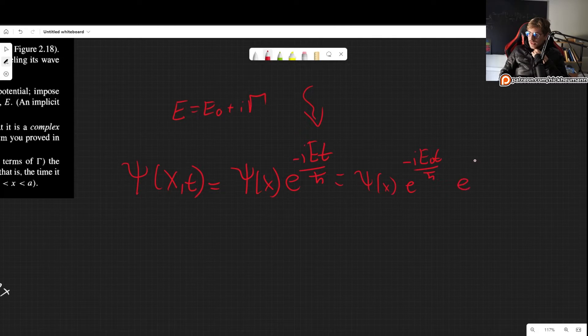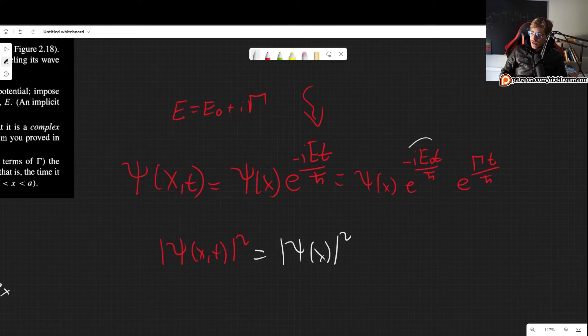So this is psi of x e to the minus i E0 t over h bar. And then we get e to the minus, but then we get i squared. One there and one there. So we get another minus. We get plus gamma t over h bar. So now when we take the probability of finding our x, t squared, now it's important to write the x, t dependence, because this is not the same as this. And this is psi of x, modulus squared. And now this part cancels out because we multiply by its complex conjugate. So we have minus i E0 t over h bar plus i E0 t over h bar. But this part doesn't cancel out. So we get e to the 2 gamma t over h bar.